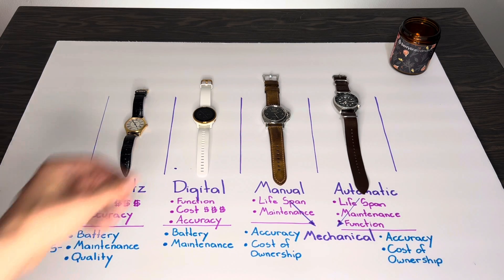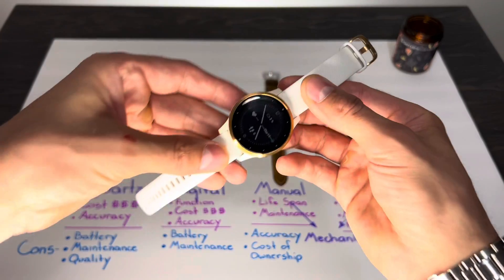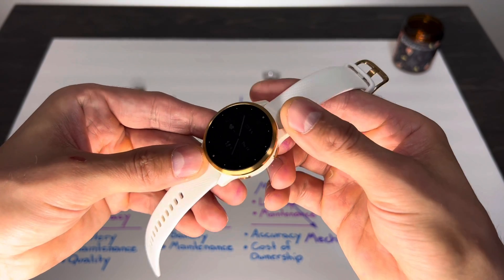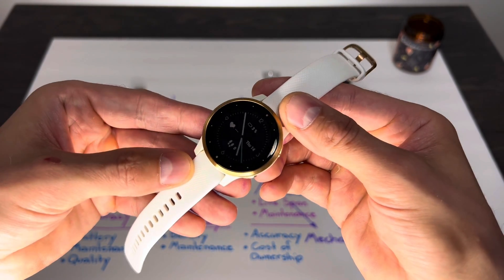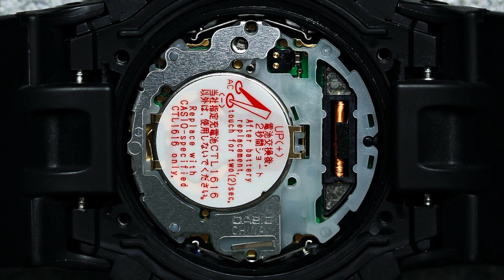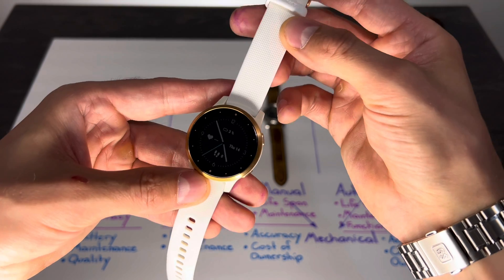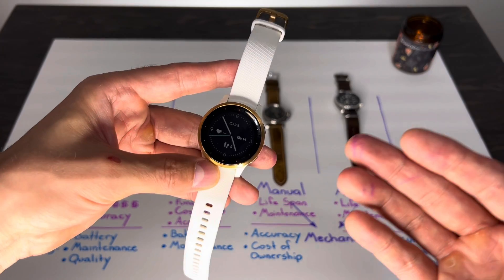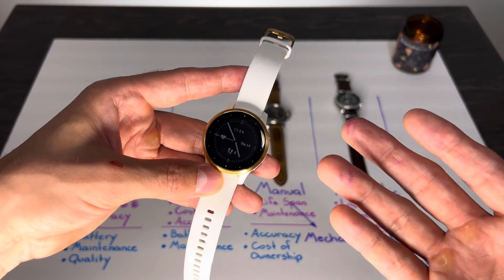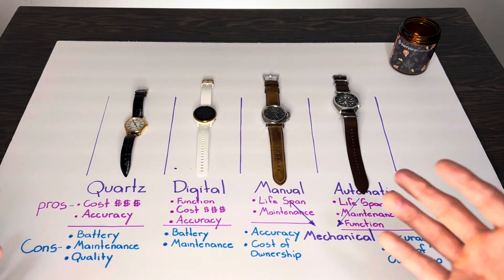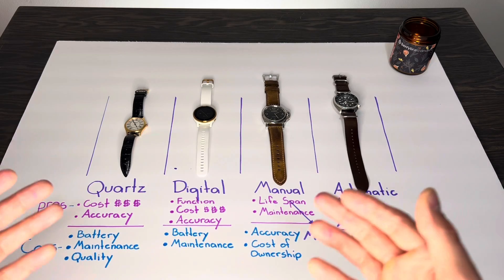A digital watch essentially has the most functionality because it is operated through software or a circuit board that can display the time on a digital screen. I'll post a picture of what the interior of a digital watch actually looks like. Some of the incredible digital watchmaking comes from G-Shock, a brand I'm sure a lot of you are familiar with.